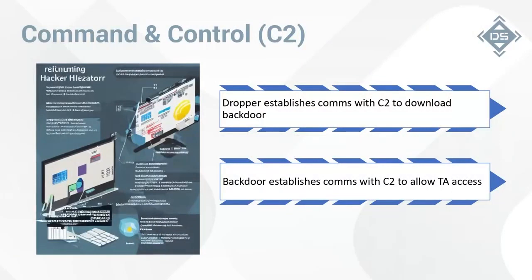As was mentioned earlier, the kill chain and various frameworks are a bit fuzzy. When I say installation leads into command and control, you're actually already seeing some C2 earlier — when the web shell reaches out to grab a backdoor, or the dropper reaches out to C2 and pulls down a backdoor. So there are kind of primary and secondary command and control phases. A dropper establishes communications with C2, pulls down a backdoor, and then that backdoor also establishes communications with the C2 server to allow the threat actor access to the system.